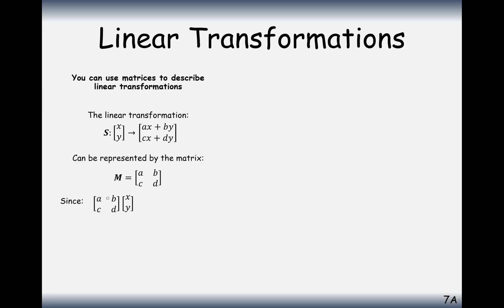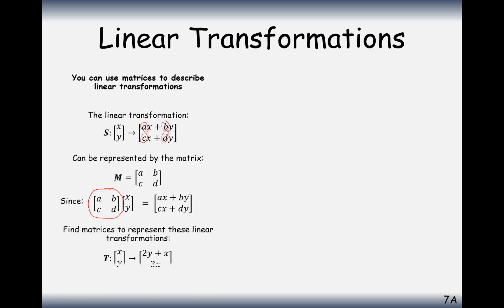When you multiply out the matrix, you get a times x add b times y on the top row, and c times x add d times y on the bottom row. So you can just look at the coefficients of your transformation and those make up your matrix — it's as straightforward as that.